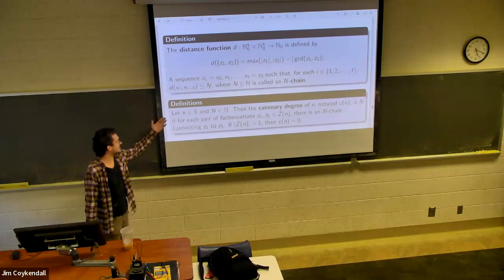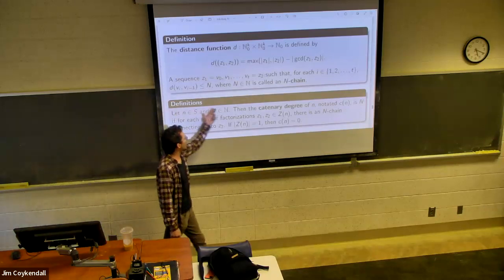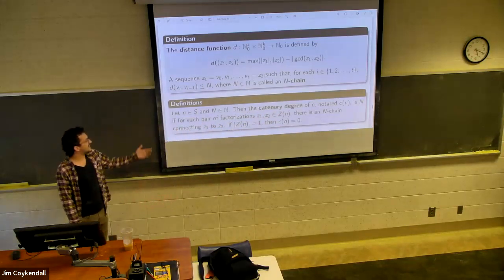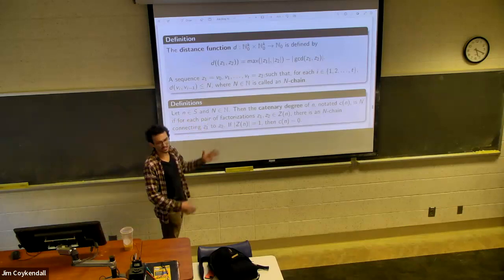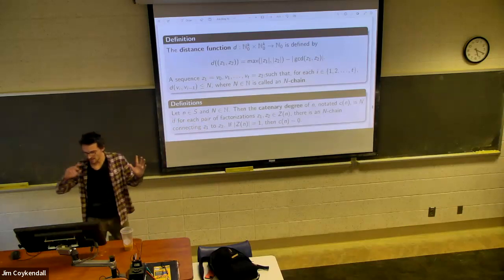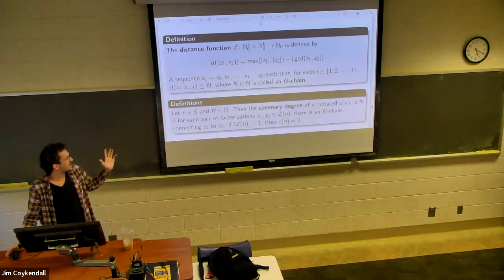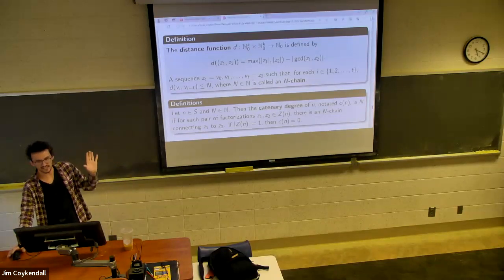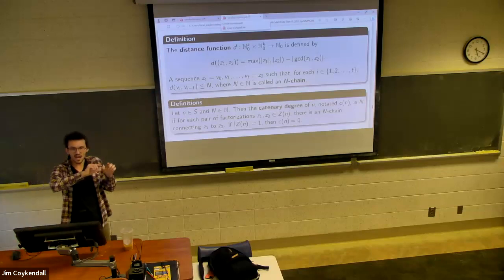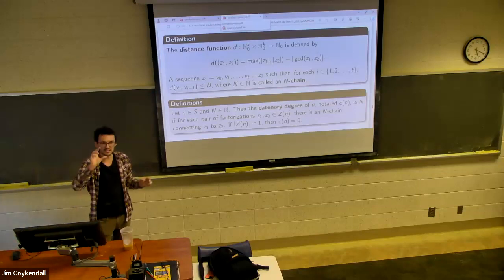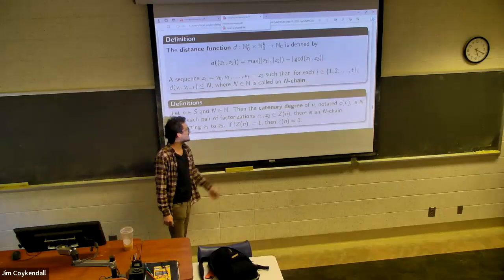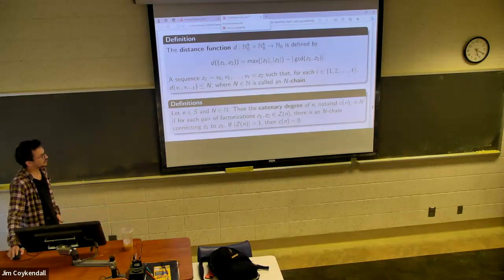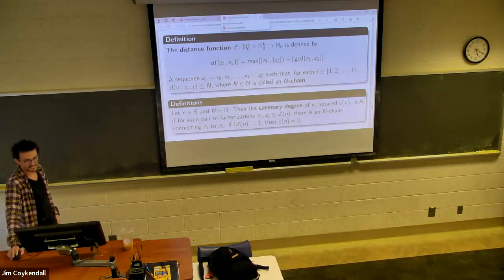So then we can get to our catenary degree, which is saying, okay, well, the catenary degree denoted C of n is equal to n for any pair of factorizations. So you have the whole set, you have your whole factorization set, and you take any two. You can find an n chain connecting those two. So you can find, in a sense, a path of factorizations where the distance between any two does not exceed n. If there's only one factorization, then we say that the catenary degree of that element is zero.